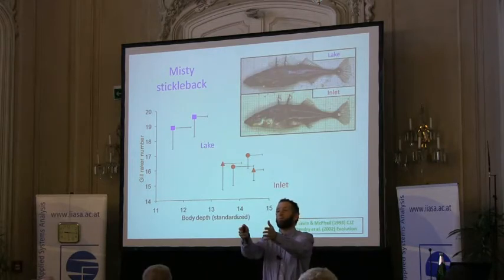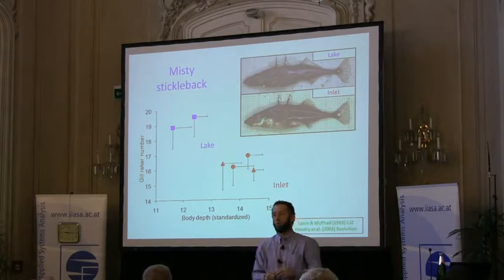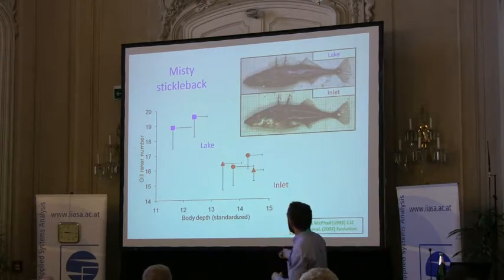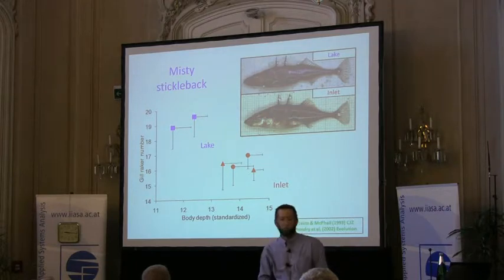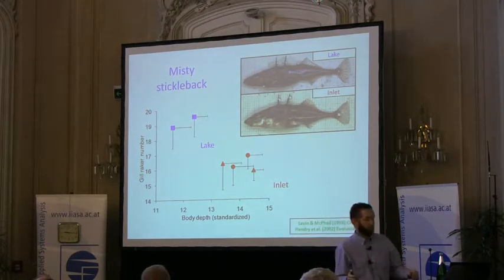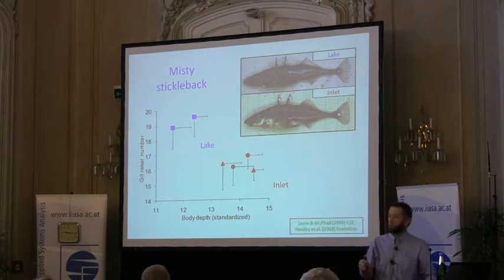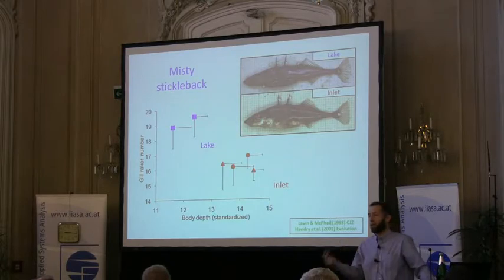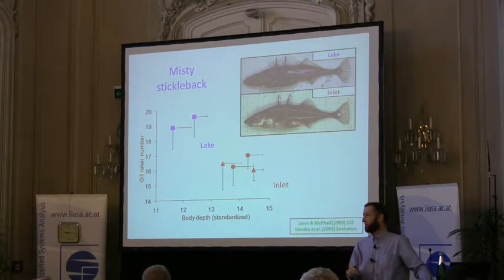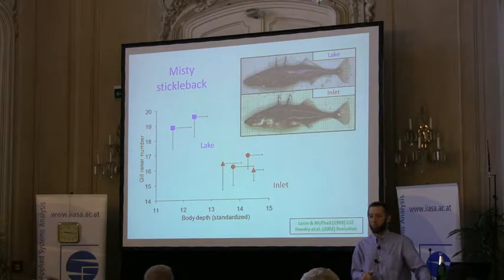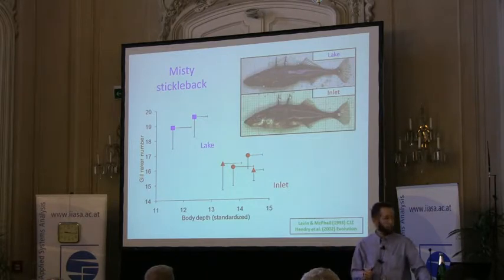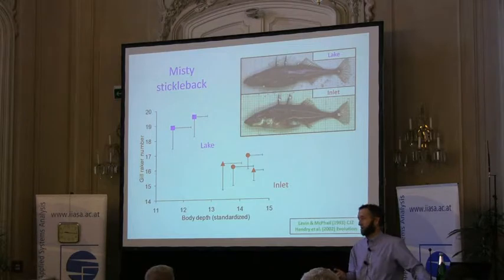The lake fish do a lot of constant swimming while searching for zooplankton, whereas stream fish spend time in complex environments looking for benthic macroinvertebrates - they don't swim in the middle of the current. So once you have this morphological variation across many traits, the next question is: what's the genetic basis for that?